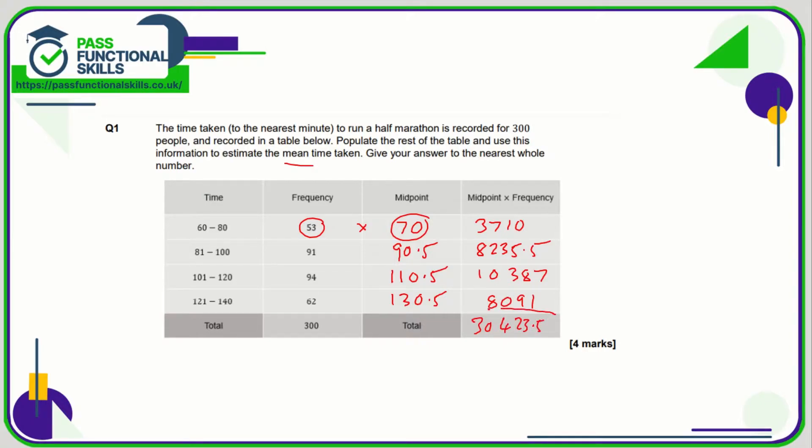So this is going to be the total time for all 300 runners. So therefore the mean time is going to be the total time, which is 30,423.5 minutes divided by the 300 runners, and that works out as 101.4 minutes. We've been told to give our answer to the nearest whole number, so that is 101 minutes.